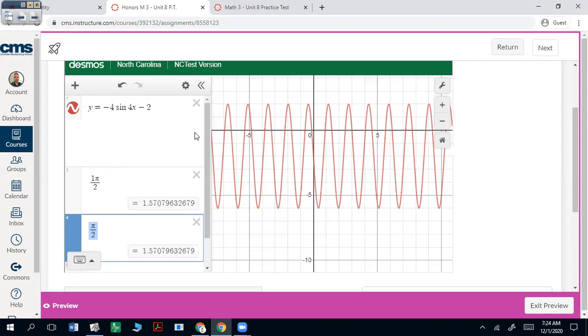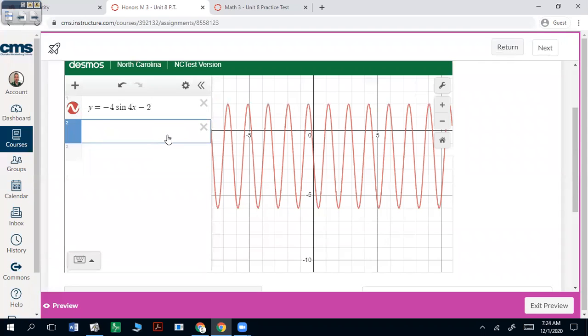You can cheat, I guess, if you want to graph the midline. You can just say y equals negative 2. And that period here would be when it repeats itself. So pi over 2 is your x value there.